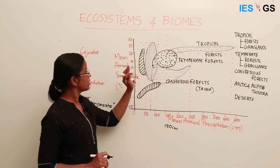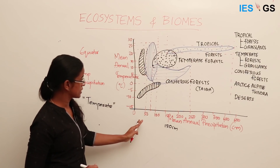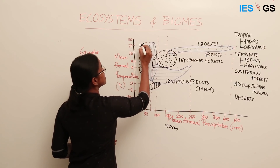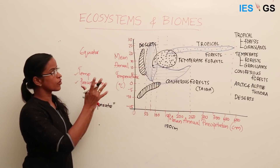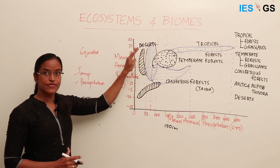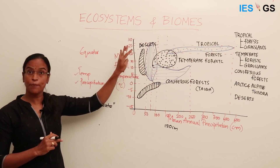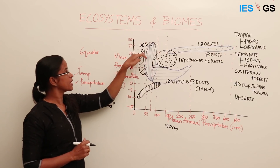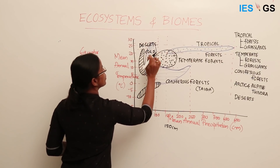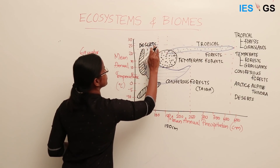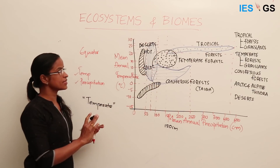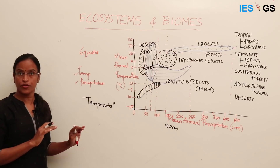Now comes an ecosystem with very little precipitation — less than 50 cm. This is nothing but deserts. Deserts and tropical forests are the two extremes in terms of precipitation. The most defining factor in a desert ecosystem is precipitation — it is the limiting factor. The temperature range is wider because we have both hot deserts and cold deserts, but in both cases the moisture content is not enough to support normal plant life.